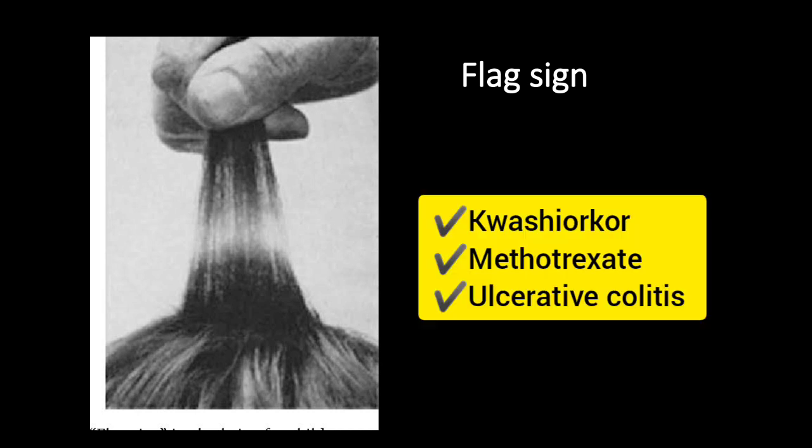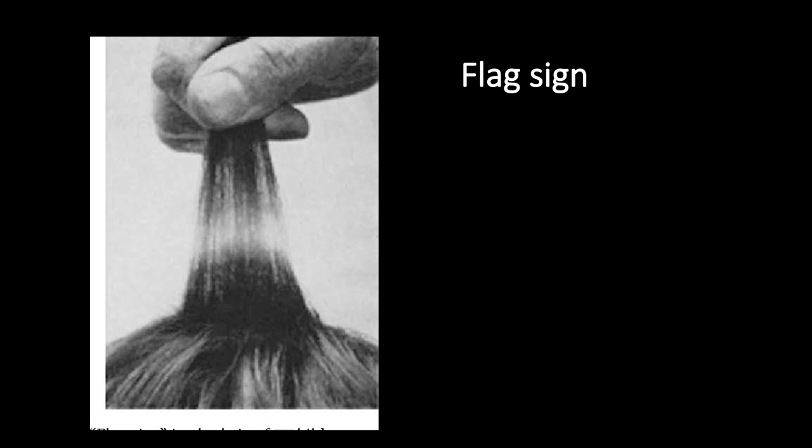Flag sign: it refers to horizontal alternating bands of discoloration in the hair shafts corresponding to periods of normal and abnormal hair growth. This sign is seen in patients with nutritional deficiencies such as kwashiorkor, with certain medications such as intermittent high dosage of methotrexate, following chemotherapy, and in patients with ulcerative colitis.